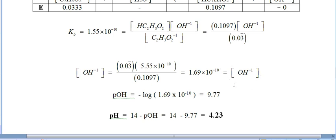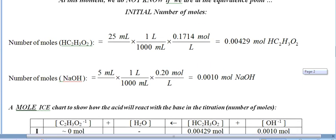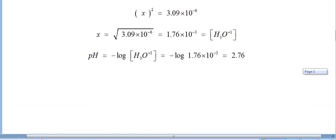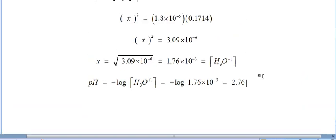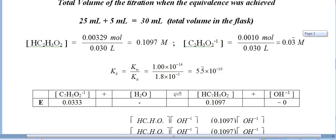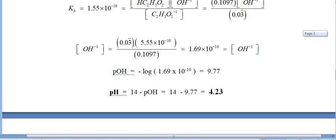Now that should make some sense here—that if we add a strong base, we would expect the pH to increase. Before we added any of the strong base and it was just the acetic acid, we had a pH value of 2.76. So yes, that makes sense. The pH should go up or should increase if you add a strong base to the solution.